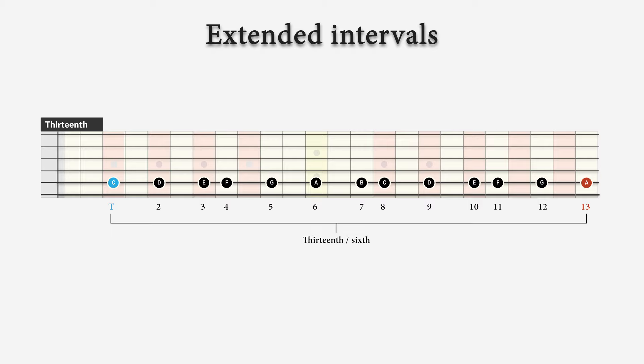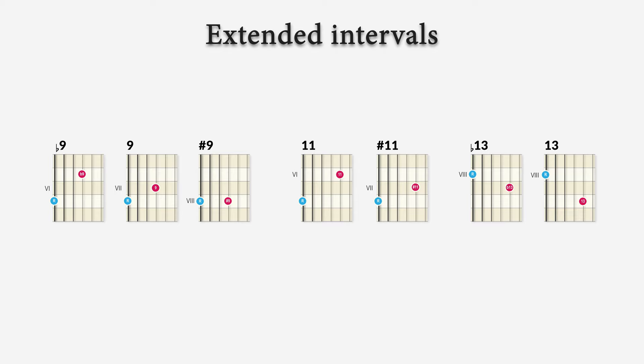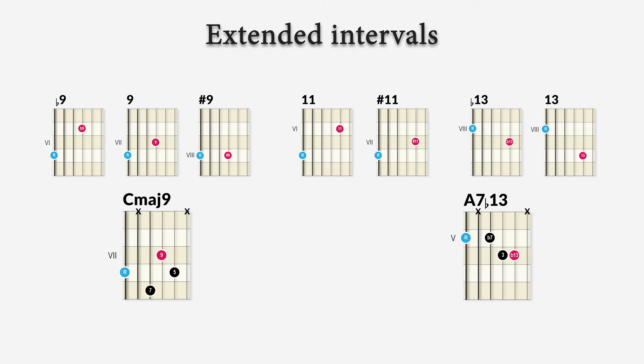Now, the ninth, eleventh, and thirteenth are the most used extended intervals because we find these in chords as chord extensions. Think of the C major 9, for instance, or the A dominant 7 flat 13. Now, we can play arpeggios that are constructed of wide intervals, such as the fifth, the seventh, the ninth, instead of stacking thirds, which is the common thing to do. However, in this tutorial, we will concentrate on scale patterns with larger intervals and leave the wide interval arpeggios for our next video.